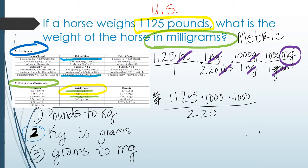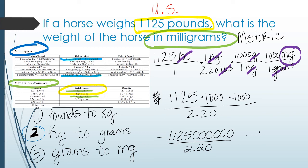Now I'm going to multiply the numbers in the numerator: 1,125 times 1,000 times 1,000 again. Be careful with all the zeros — I have 1, 1, 2, 5 followed by 6 zeros. And that is divided by 2.20. The final answer is 511,363,636.4 milligrams.